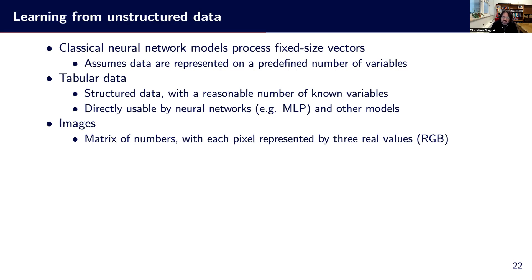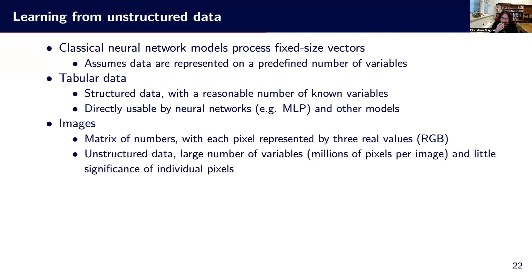When dealing with images, it's not the same — an image is basically a matrix of numbers where each pixel represents three real values: red, green, and blue. We can use it as input to an MLP, but the large number of variables — we're talking about millions of pixels per image — makes it very inefficient. Every pixel alone has little significance; we gain much more from many pixels grouped together and organized in local positions.